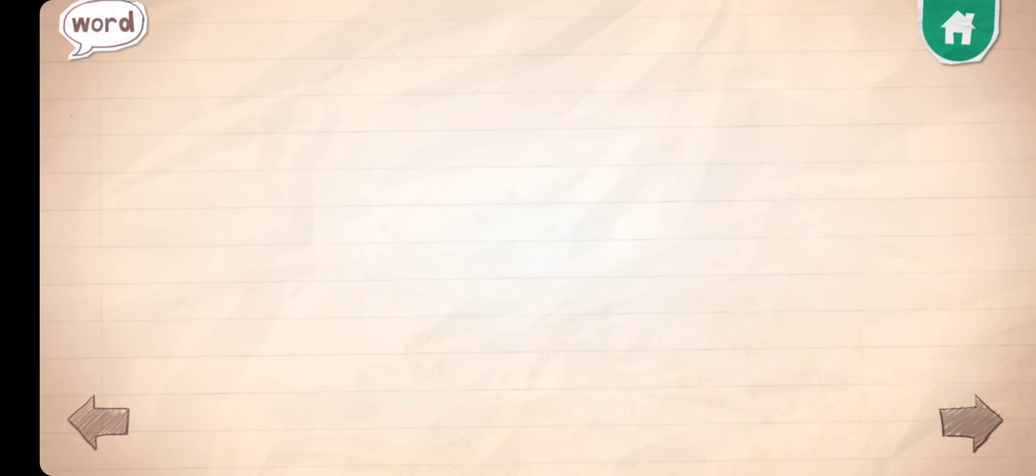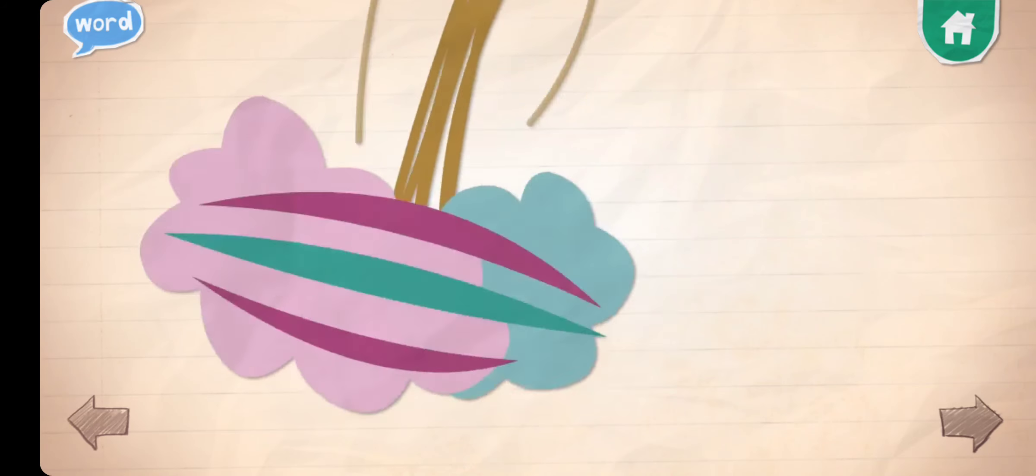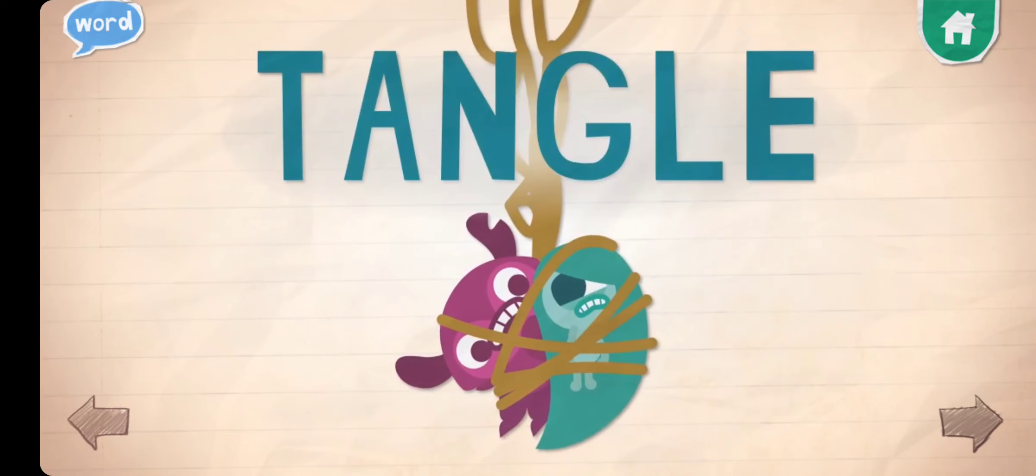Tangle! A tangle is a mess of ropes or strings. Hair gets tangled all the time.